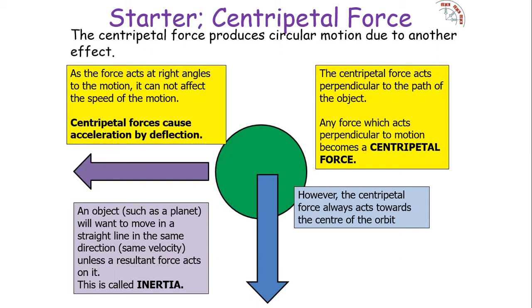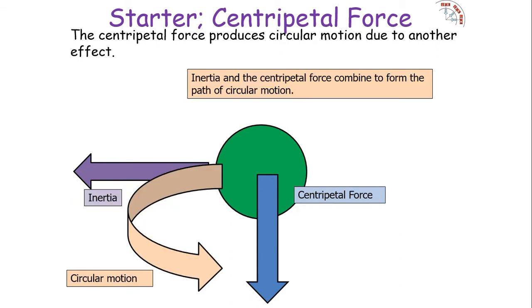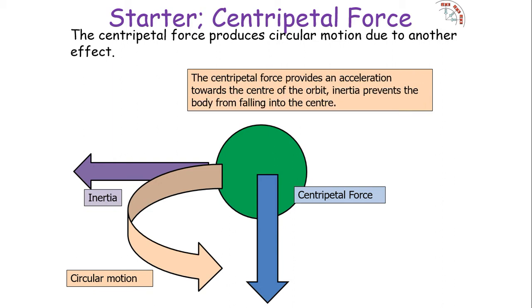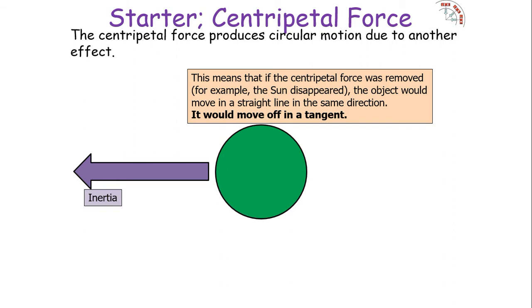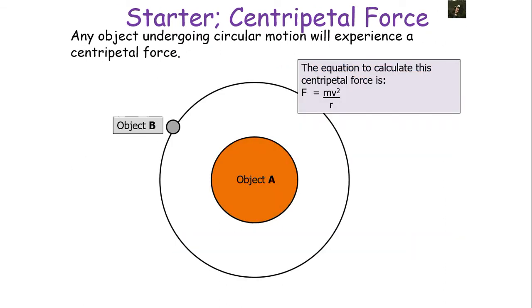Inertia and the centripetal force combine to form the circular path of circular motion. The centripetal force provides an acceleration towards the centre of the orbit, while inertia prevents the body from falling into the centre. Together they ensure the object follows a circular path. So if the centripetal force were removed — for example, if the Sun disappeared — the Earth would move in a straight line in the same direction, moving off at a tangent and reverting back to the laws of linear mechanics.